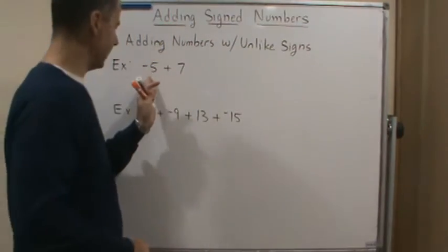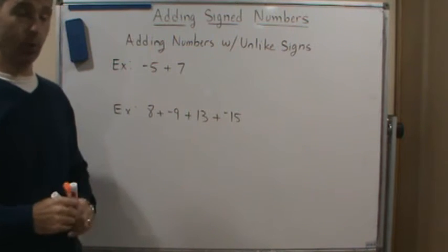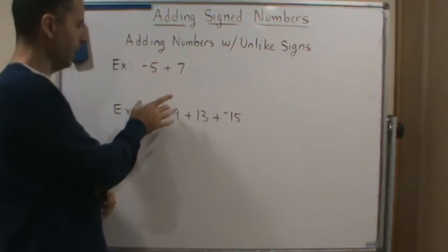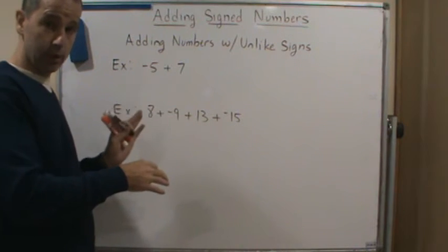So this is negative 5 plus 7. So what do we do? We ignore the negative signs, right? We ignore the signs. And we just subtract the smaller number from the bigger number.